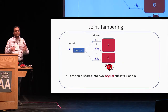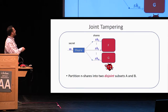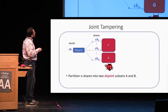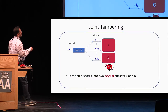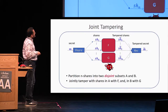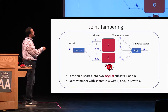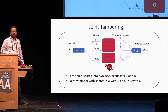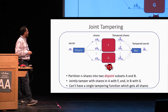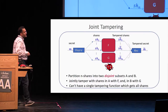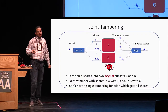A natural strengthening of this model is joint tampering. Here, the adversary partitions the n shares into two disjoint subsets A and B. The adversary takes all the shares in A, tampers with them jointly, and produces some subset of tampered shares. Similarly for set B.